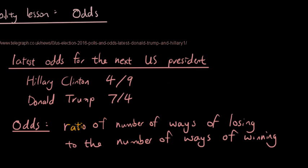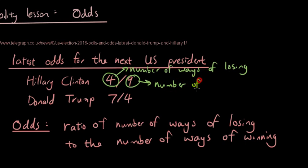So odds are basically a ratio of the number of ways of losing to the number of ways of winning. So if you have a look at Hillary Clinton's odds, 4 represents the number of ways of losing, and 9 represents the number of ways of winning.